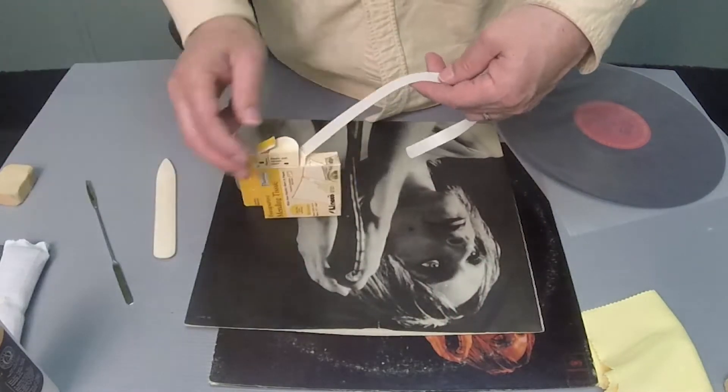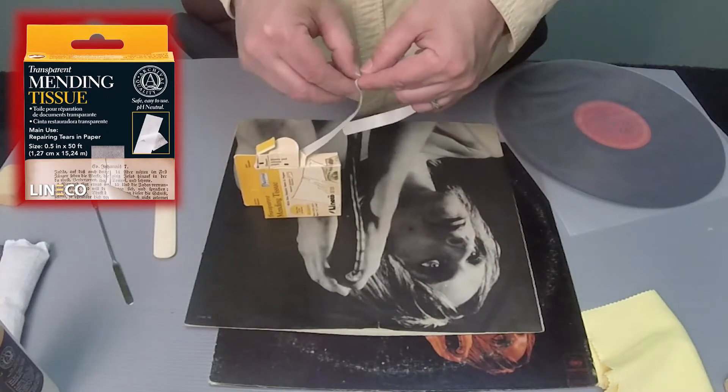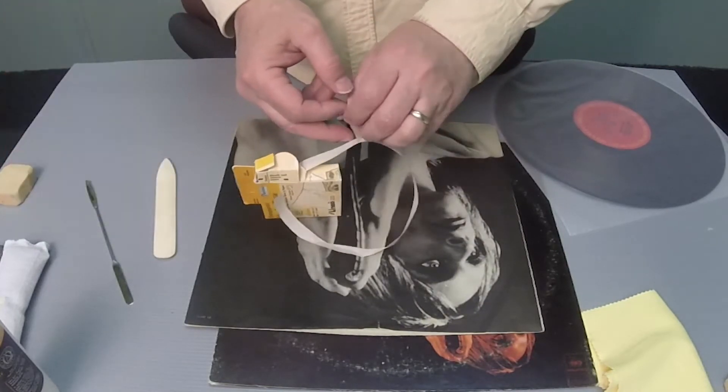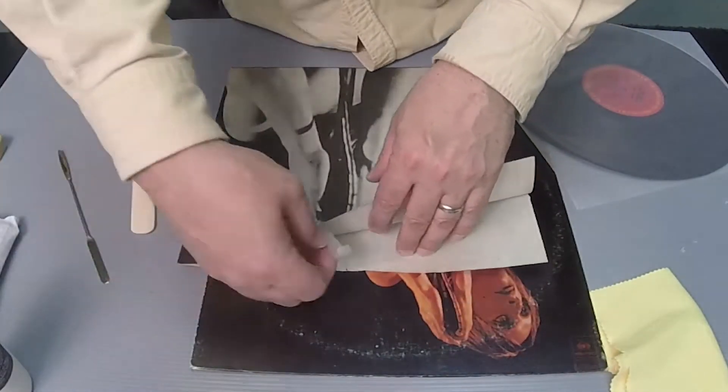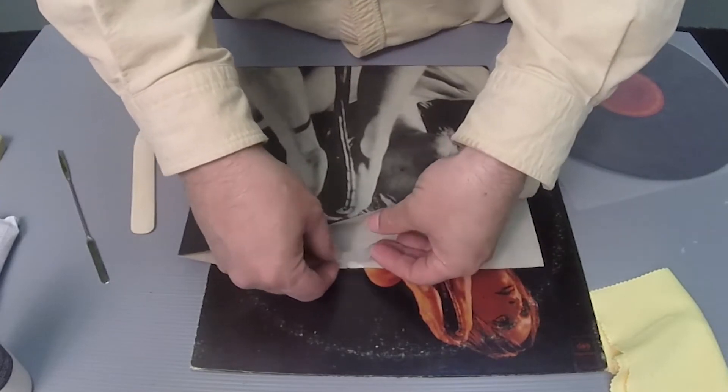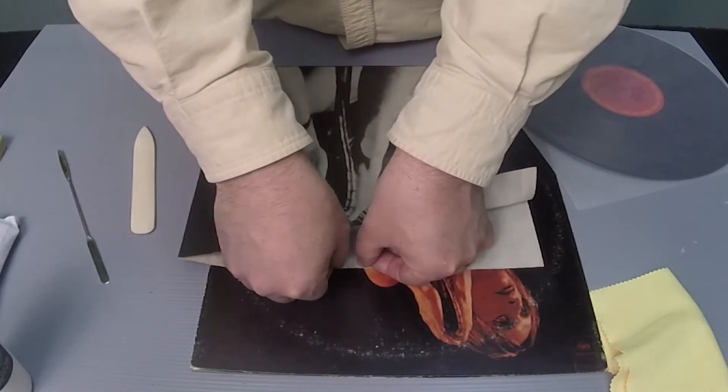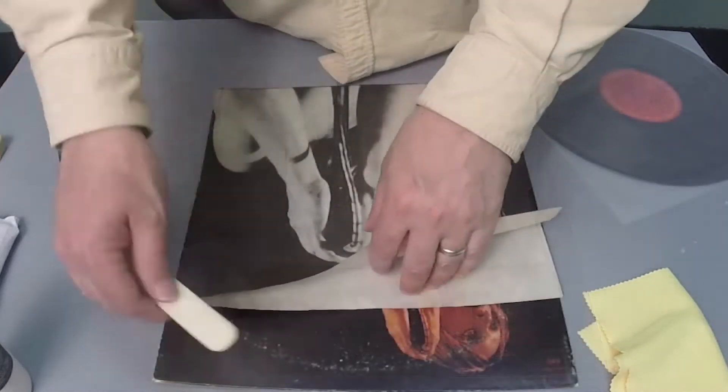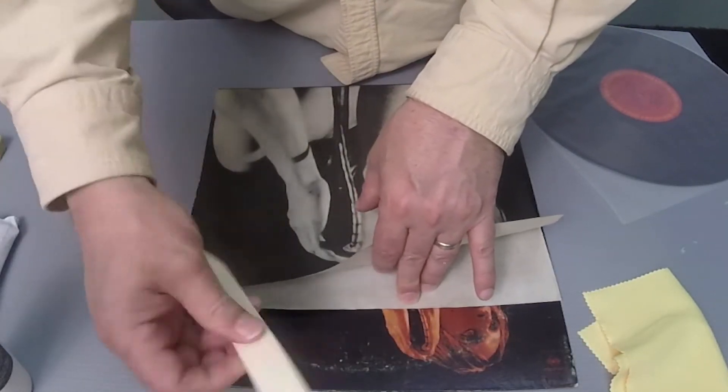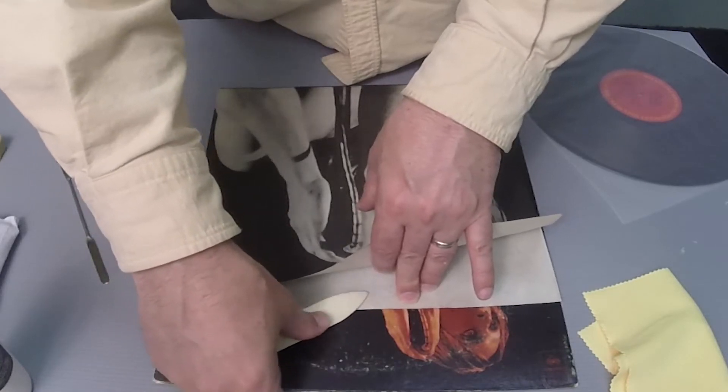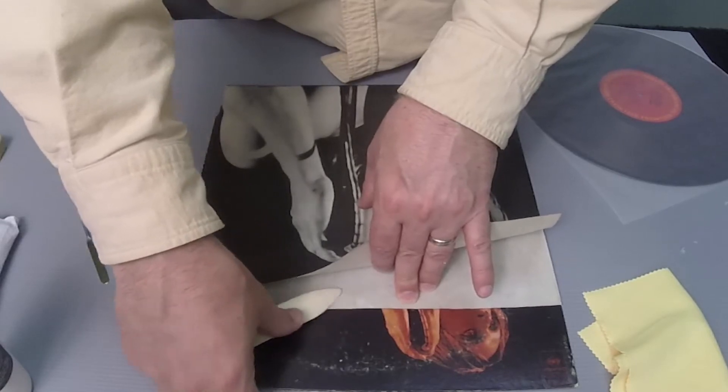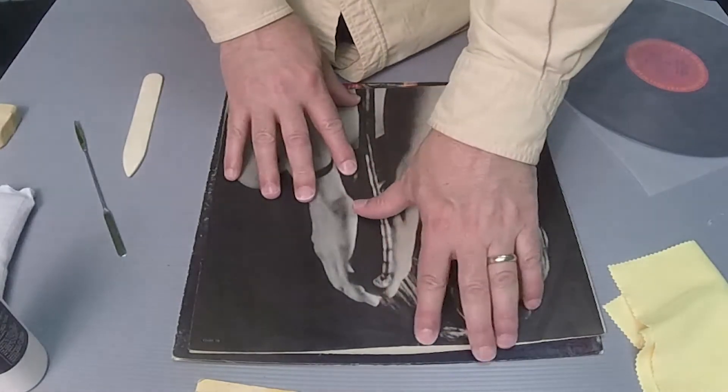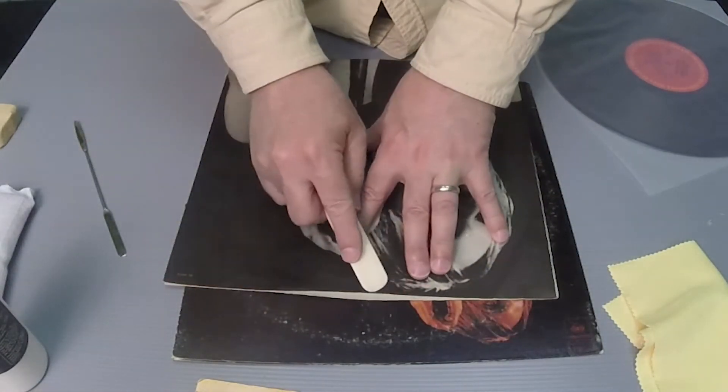I am going to use BU's document mending tissue to repair this tear and help prevent it from getting worse. After flattening out the paper, I apply a small piece to the inside of the sleeve. Using the bone folder to smooth it out, the tear is nearly invisible.